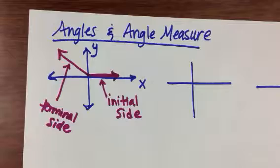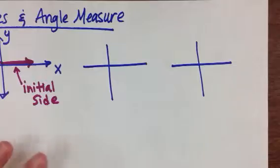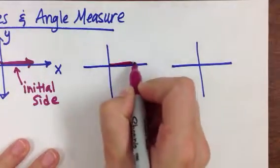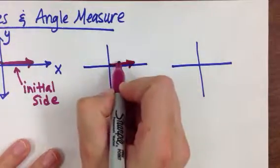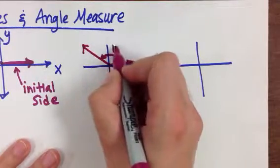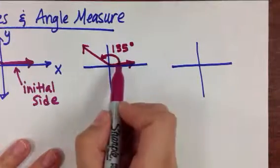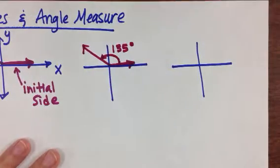So we're going to make a few angles just to take a look at some. If I draw my initial side on my positive x-axis and I go counterclockwise and say I come way over here, I call this 135 degrees. So going counterclockwise with your terminal side will give you a positive angle.